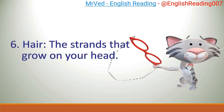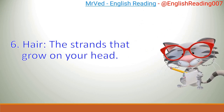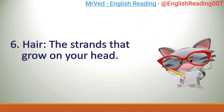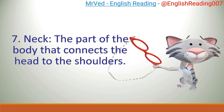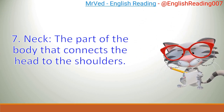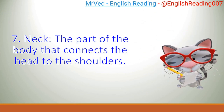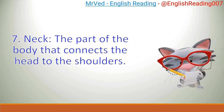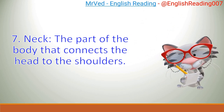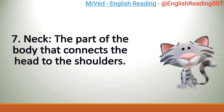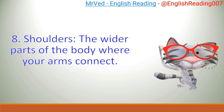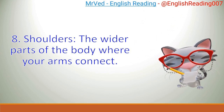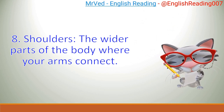6. Hair, the strands that grow on your head. 7. Neck, the part of the body that connects the head to the shoulders. 8. Shoulders, the wider parts of the body where your arms connect.